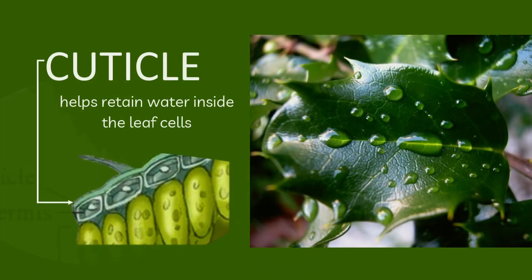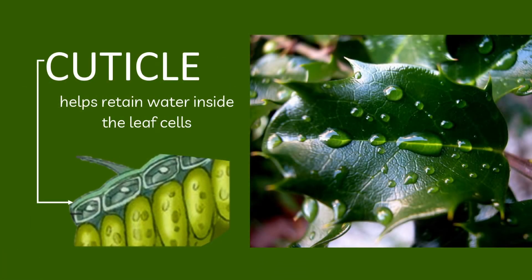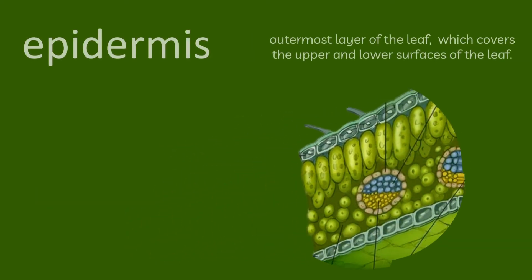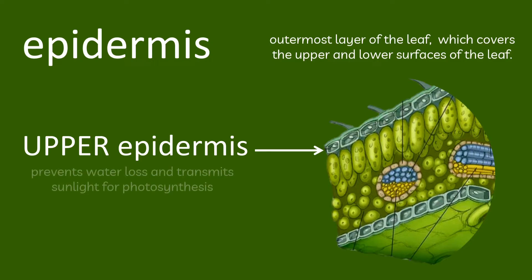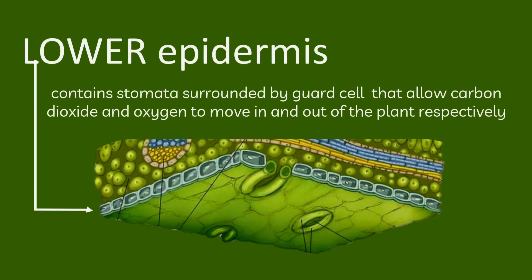Now let us move to the cross section of the leaf. The leaf starts with the cuticle, which helps retain water inside the leaf cells. Next is the epidermis, which is the outermost layer of the leaf, covering the upper and lower surfaces. The upper epidermis prevents water loss and transmits sunlight for photosynthesis.